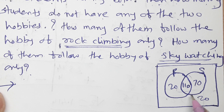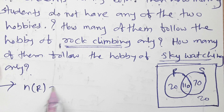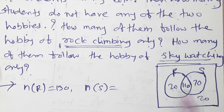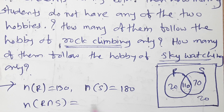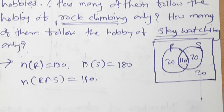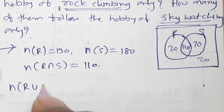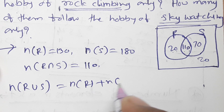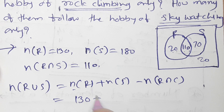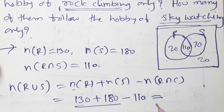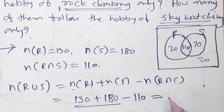Using the formula: number of R (rock climbing) = 130, number of S (sky watching) = 180, number of R intersection S = 110. Number of R union S = number of R plus number of S minus number of R intersection S = 130 + 180 minus 110 = 310 minus 110 = 200.